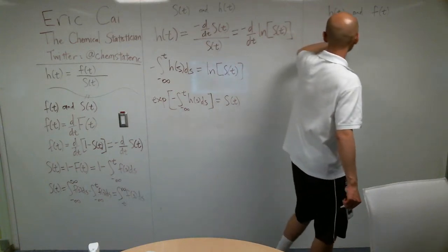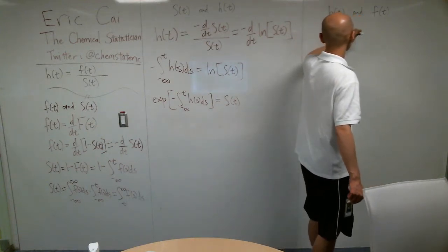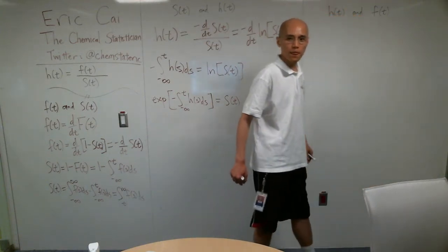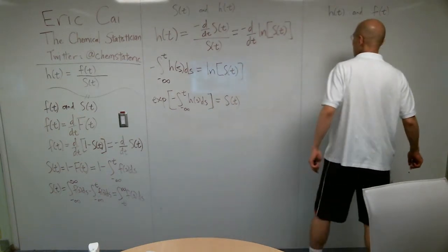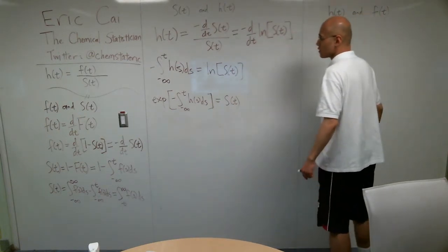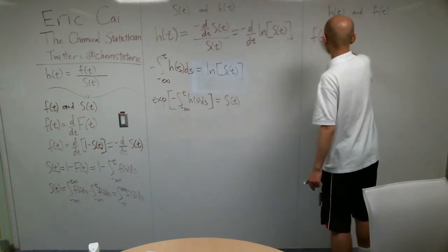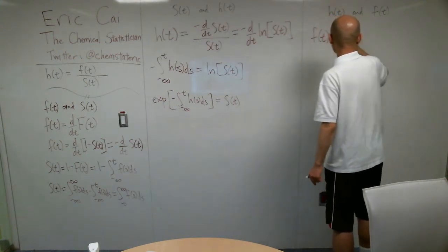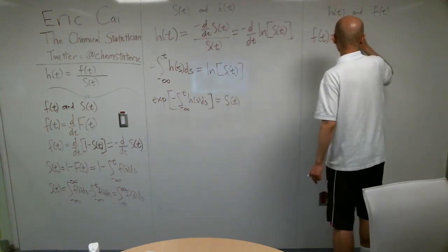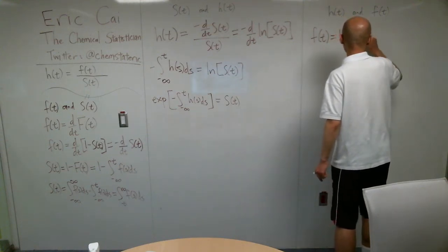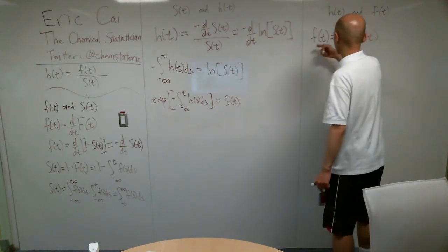Let's finally conclude with the two relationships between the hazard function and the PDF. So let me rewrite that original equation as the product of the hazard function and the survival function. That's our PDF.